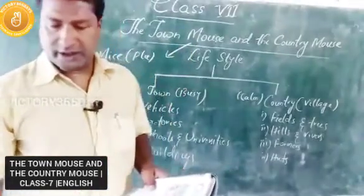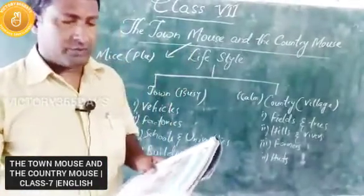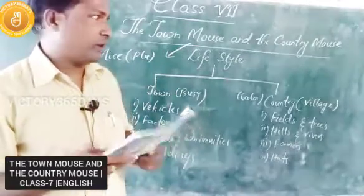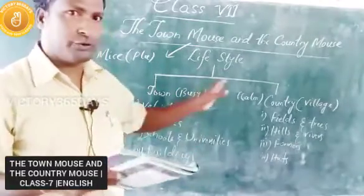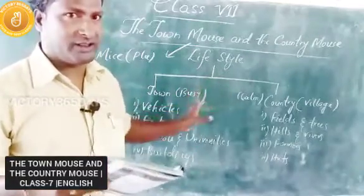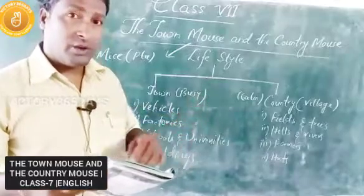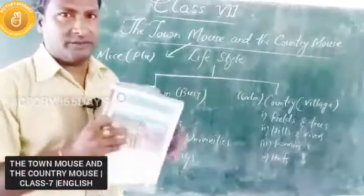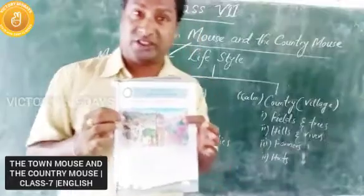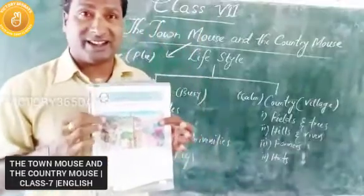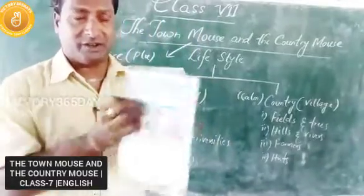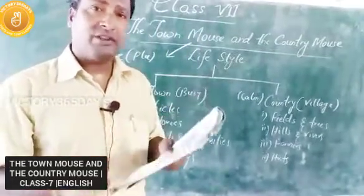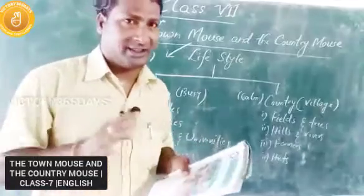Yesterday I discussed the total lifestyle of two different areas. Now we observe this picture. By observing this picture, what do you understand? First of all, you have to understand it thoroughly, then we will go into the lesson carefully.